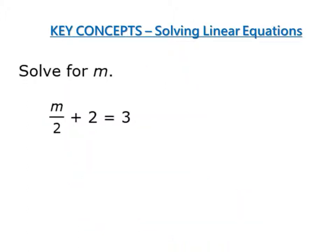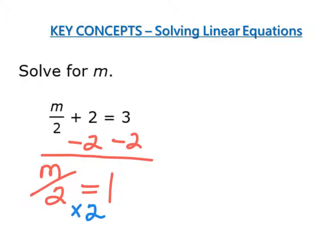Our last example has a number in the denominator, but it also has another number without a denominator. We have to get rid of this number first before we multiply. So the first thing I need to do to both sides is subtract 2. That leaves me with m divided by 2 equals 1, because 3 minus 2 is 1. Now all I have left is a number in the denominator. So I'm multiplying both sides by 2, which gives me m equals 2.